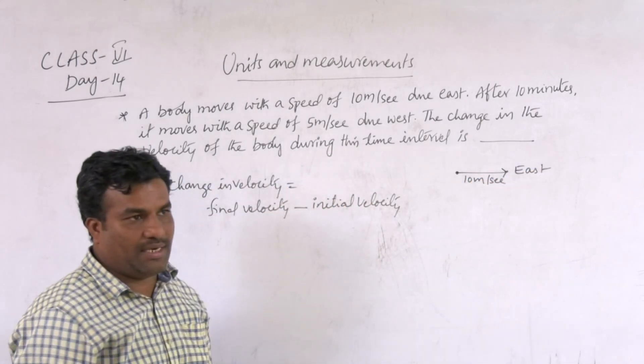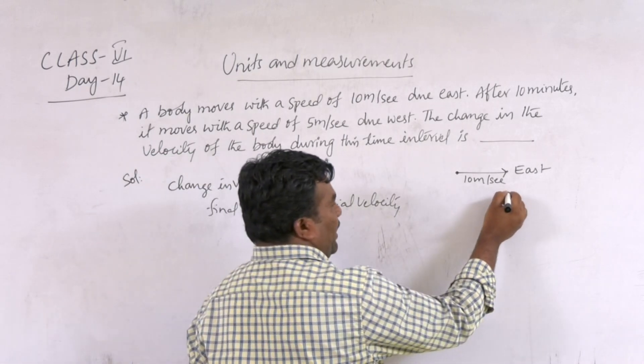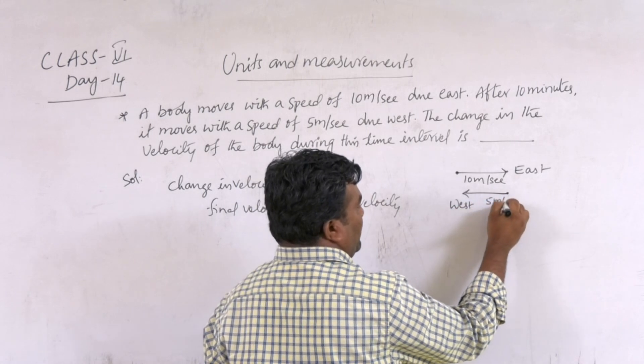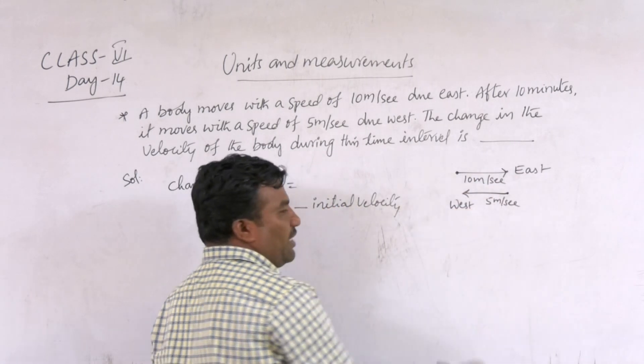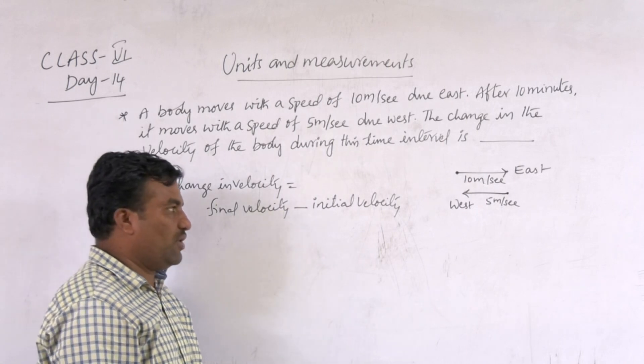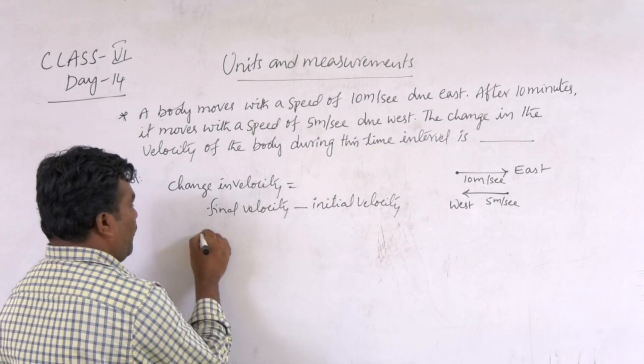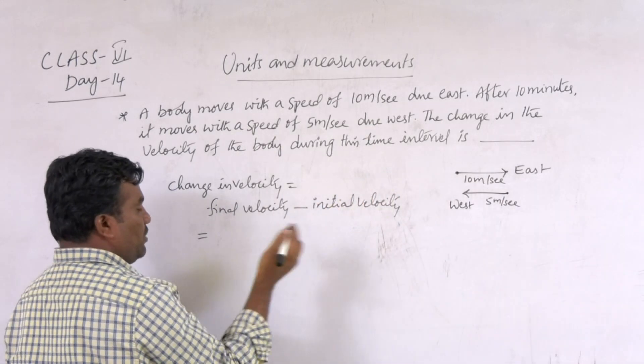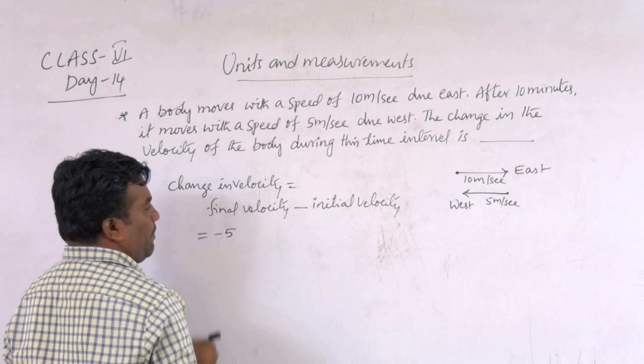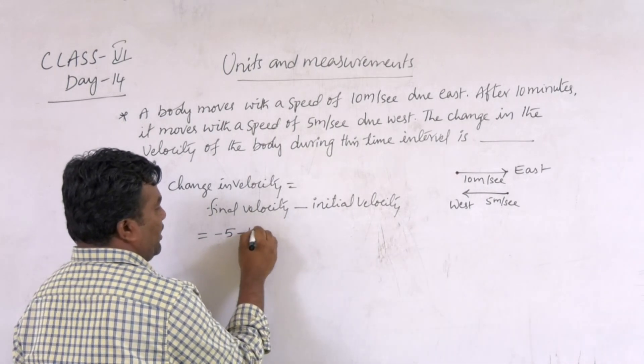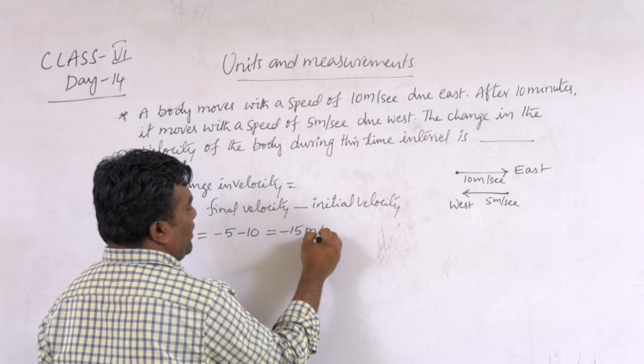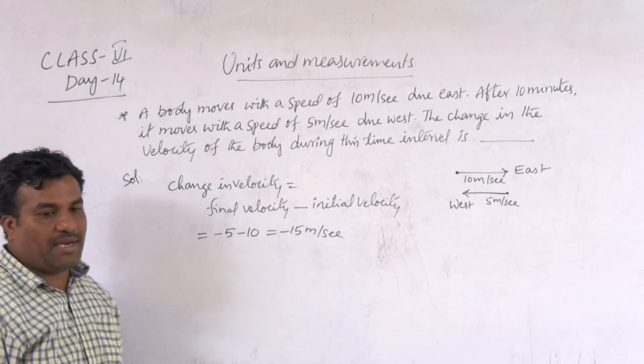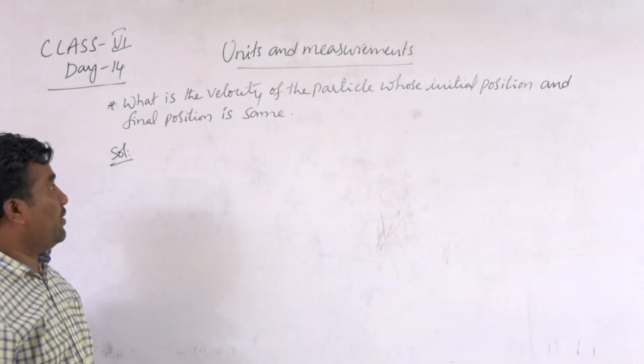And after 10 minutes, it comes back to the west with 5 meters per second. East is the forward direction, west is the backward direction. So the final velocity is backward to initial. That's why here is minus 5 minus 10. So totally minus 15 meters per second. Change in velocity is minus 15 meters per second.